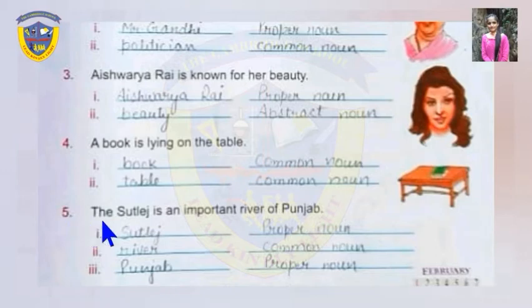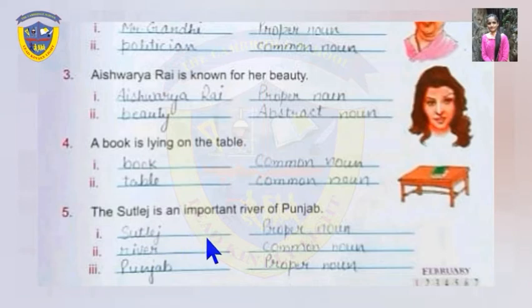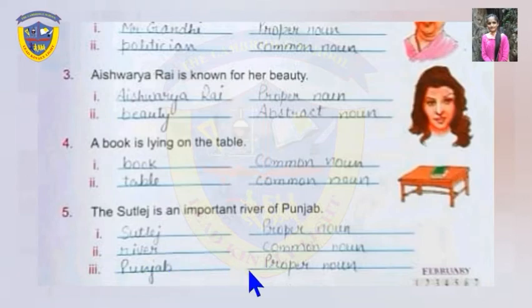Sentence five: the Satluj is an important river of Punjab. Here, Satluj and Punjab are two nouns. Satluj is the name of a specific river, so it's a proper noun. River itself is a common noun. And Punjab is the name of a specific state, so it's a proper noun.